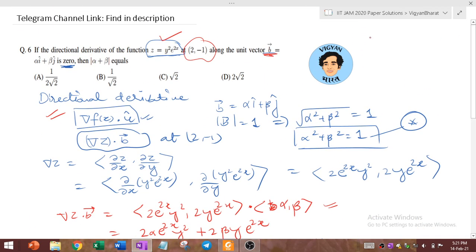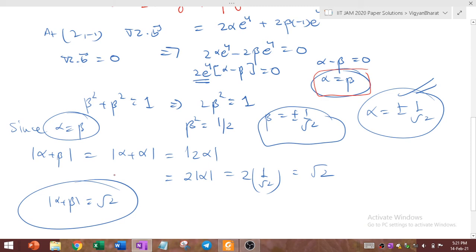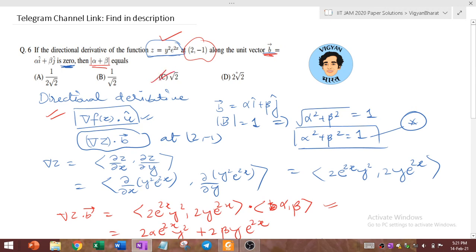Finally we have to calculate this magnitude. So we simply replaced alpha by beta and obtained that this magnitude comes out to be square root of 2. So in this particular case option C is the correct option.